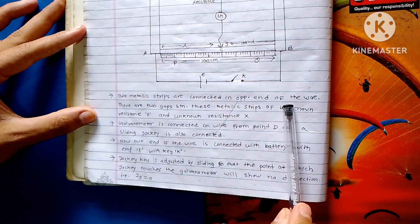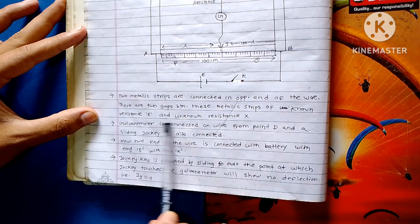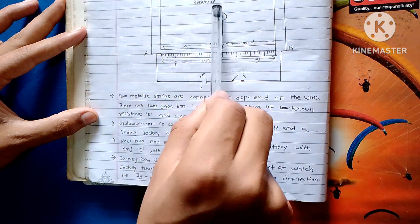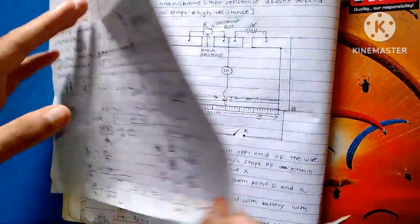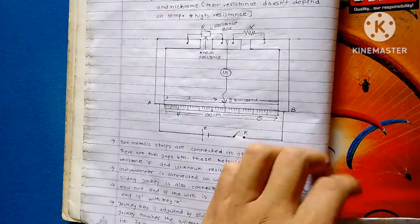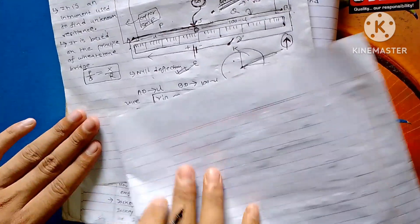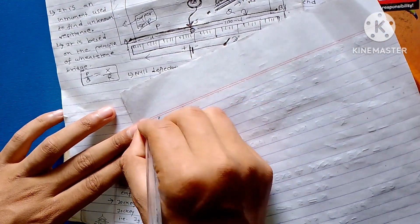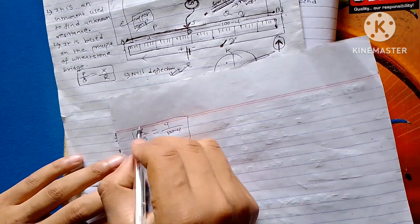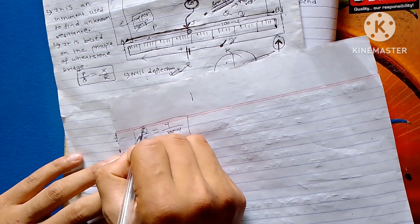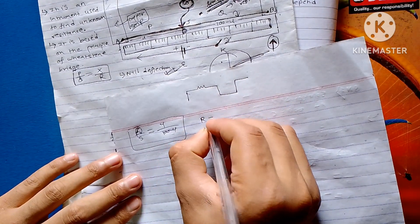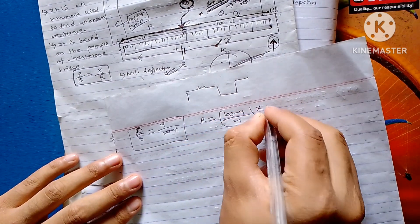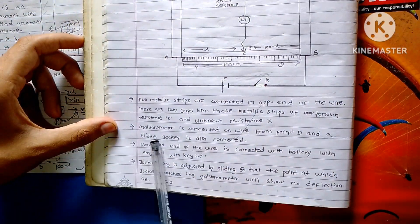Two metallic strips are connected at the opposite end of the wire. There are two gaps between. Here we go, I have to show you the right gap. You will see the left gap. You will see the right gap. This is the left gap. The right gap is connected from point D and sliding jockey is connected.